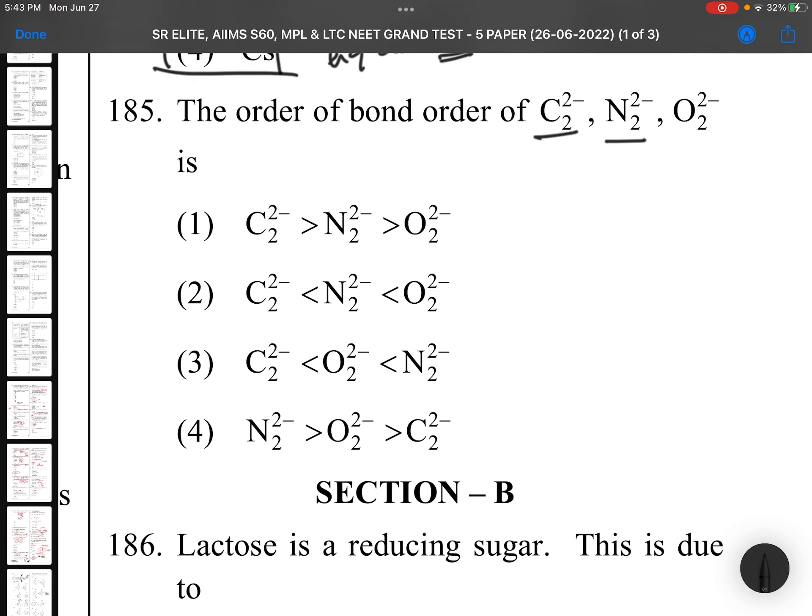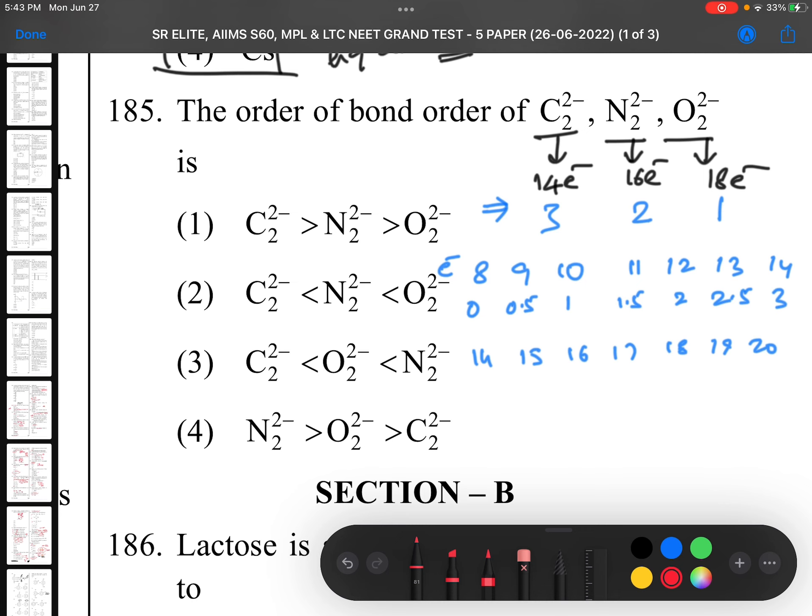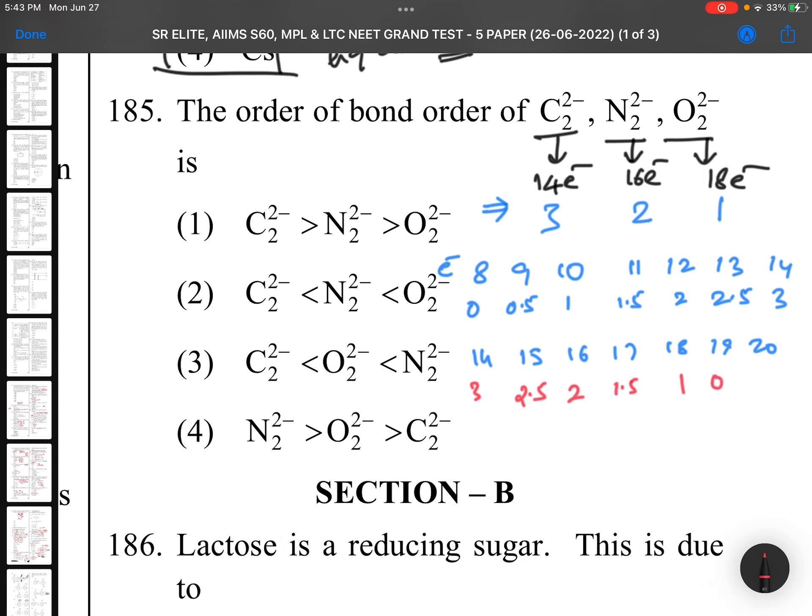Question 184: Which alkali metal has least melting point? Down the group, melting point decreases. Cesium is actually liquid at room temperature. Bromine, mercury, gallium, francium and cesium - you can take all as liquids at room temperature. Question 185: The order of bond order of C2^2-, N2^2-, O2^2-. Number of electrons are 14, 16, 18. You can see the bond order is 3, bond order is 2, bond order is 1. Bond orders start from 0, increase 0.5. Then from 14 onwards start from 3 and decrease 0.5: 2.5, 2, 1.5, 1, 0.5, 0. Only one exception: CO+ has 13 electrons but bond order is 3.5. Pure exception, remember easily.